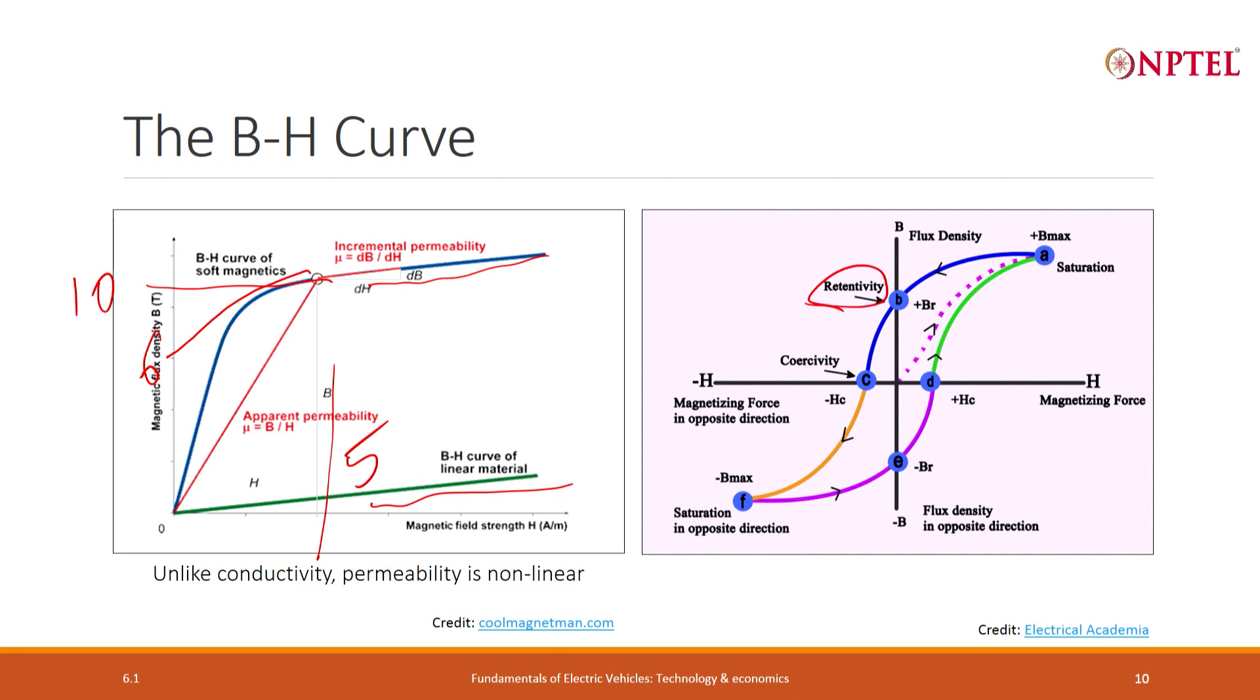If I want to completely demagnetize it, I have to now pass a negative current, let's say negative 1. Only at this point the magnetic flux is completely flushed out, and the extent of negative field that I have to give to fully demagnetize the material is given by this entity called coercivity.